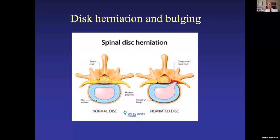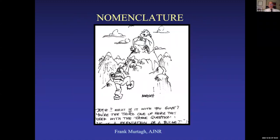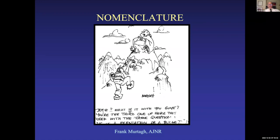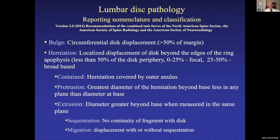Certainly nerve compression can generate pain. The classic conundrum, illustrated in a cartoon from the American Journal of Neuroradiology: when we see the disc looking abnormal in cross-section, is it a bulging disc or is there a herniation? On CT it may be harder to tell than on MR. The cartoon shows someone consulting a guru at the top of a mountain asking the same question — 'Is it herniation or a bulge?' — suggesting this is a pretty universal conundrum.